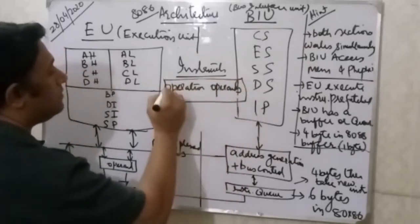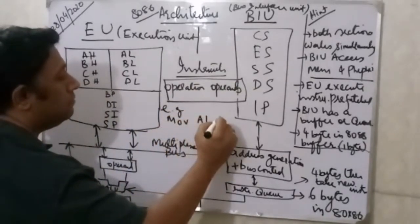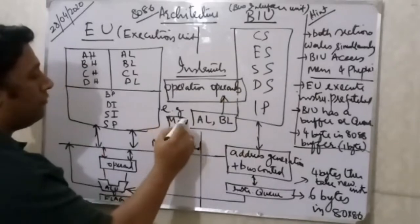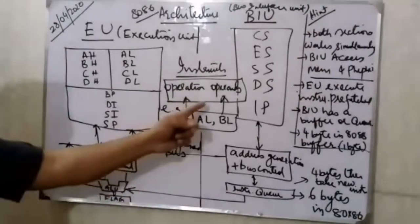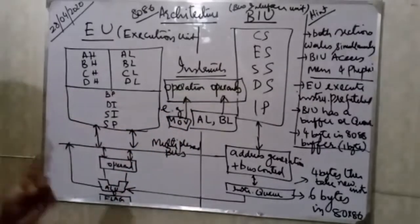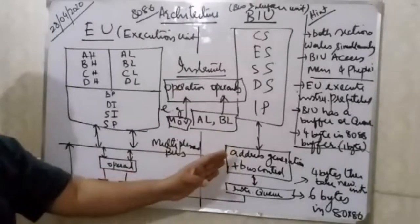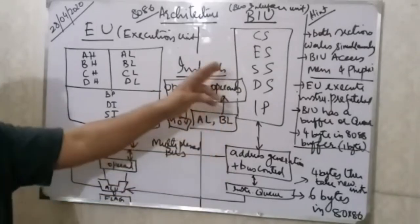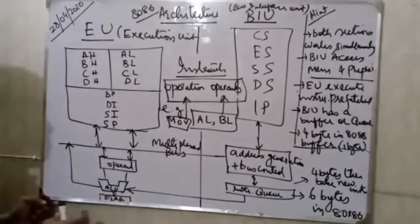An instruction consists of two things: an operation and operands. For example, MOV AL, BL — here AL and BL are the operands, and MOV is the operation. There are a number of operations already built in. We make a combination of instructions that makes a program, and that program you execute. That is the Bus Interface Unit.